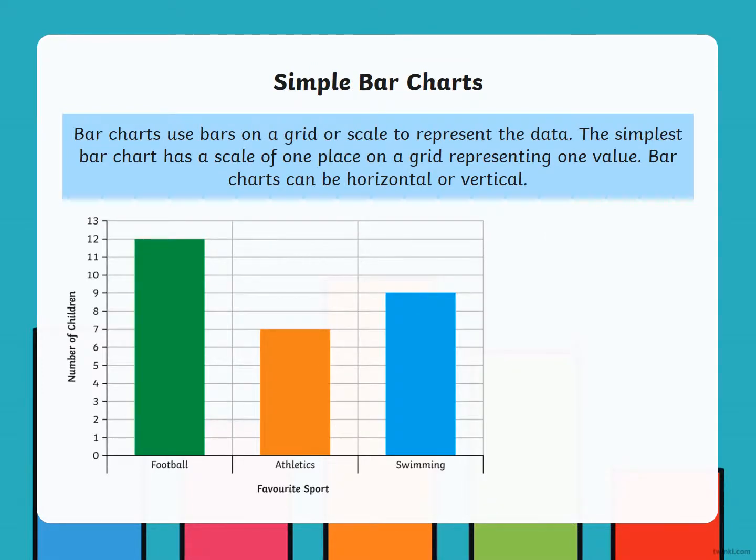Simple bar charts. Bar charts use bars on a grid or scale to represent the data. The simplest bar chart has a scale of one place on a grid representing one value. Bar charts can be horizontal or vertical.